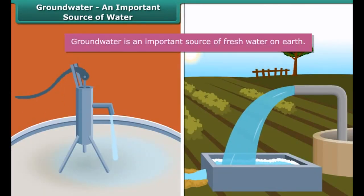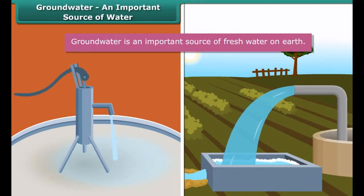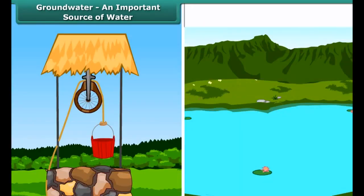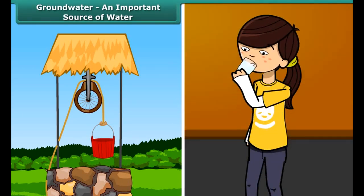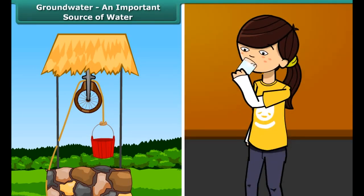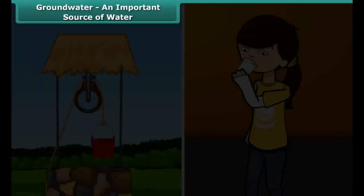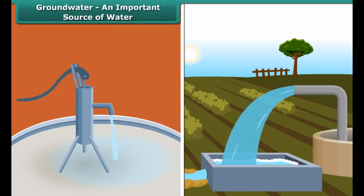Groundwater is an important source of fresh water on earth. It is the source of water for many lakes and wells. Many of us drink groundwater every day, because hand pumps and tube wells tap groundwater to provide water for consumption.